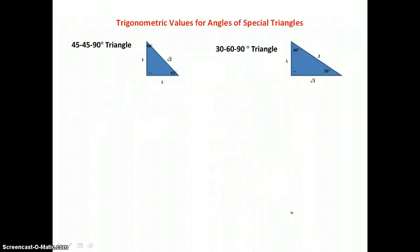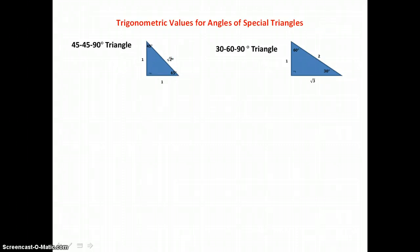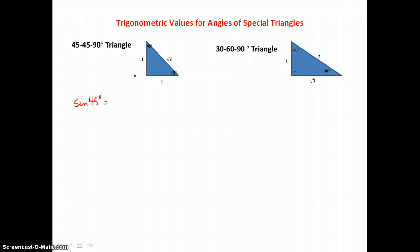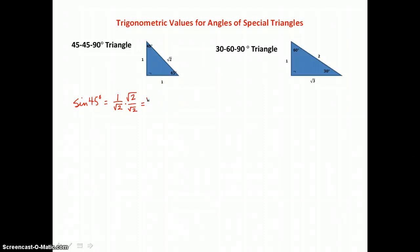Now we'll look at trigonometric values for special triangles. The first is the 45-45-90 degree triangle, whose sides are always in the ratio 1 : 1 : √2. The sine of 45 degrees equals opposite over hypotenuse, or 1/√2, which we rationalize to √2/2.